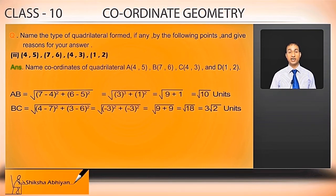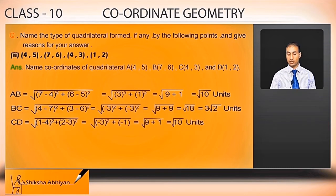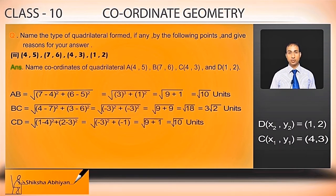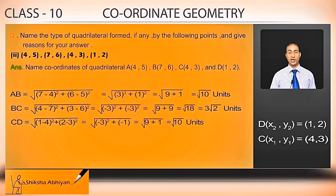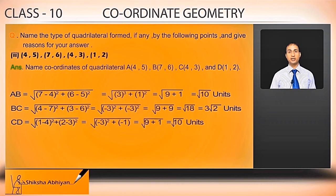Distance CD equals under root of (1 minus 4) whole square plus (2 minus 3) whole square. Taking D(1,2) as (x2,y2) and C(4,3) as (x1,y1), this becomes (1 minus 4) is minus 3 whole square plus (2 minus 3) is minus 1 whole square. Minus 3 squared is 9 and minus 1 squared is 1, so 9 plus 1 is 10, giving root 10 units.